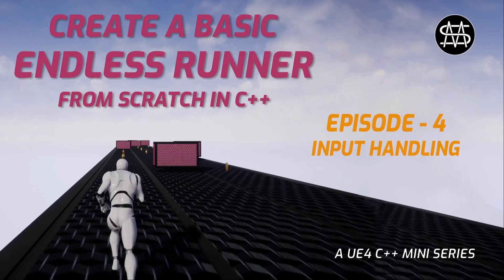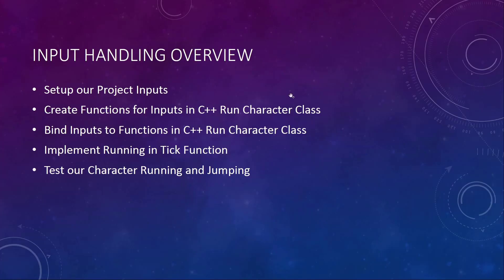Hi guys, Mike here. Welcome to episode 4 of the EndlessRunner mini-series. In this episode we are going to set up our inputs and the input handling in our RunCharacter class, and finally get this guy running. We'll set up project inputs in project settings, create functions in RunCharacter, bind inputs to those functions, implement running in a tick function, and test the character running and jumping in the scene.